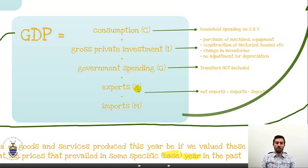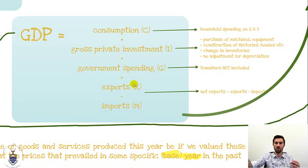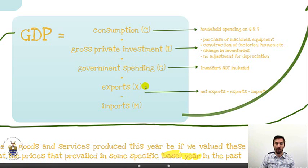What about foreigners? Foreigners buy our goods. Therefore we must include the value of exports — in other words, the value of goods that we send out of the country. Although we've sent them out of the country, they were produced within the country. Therefore the value of exports must be part of our GDP.